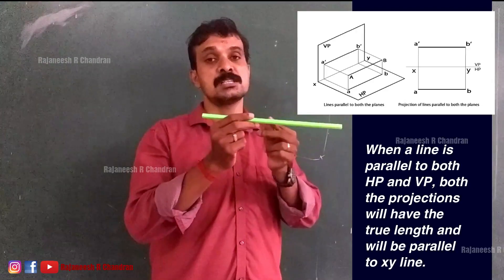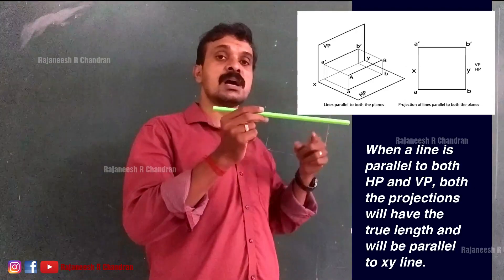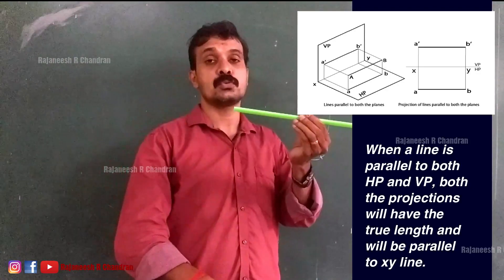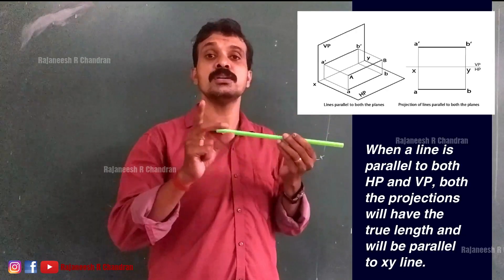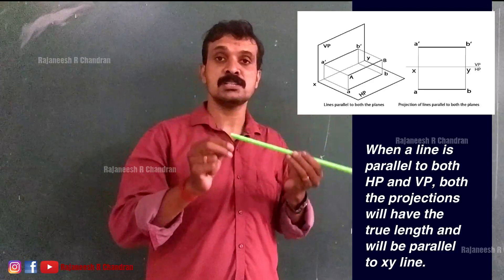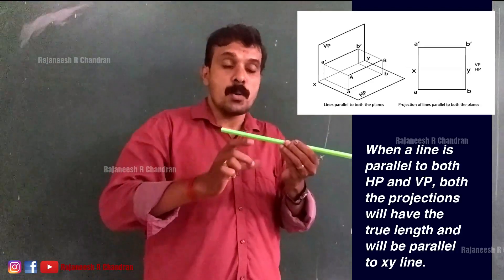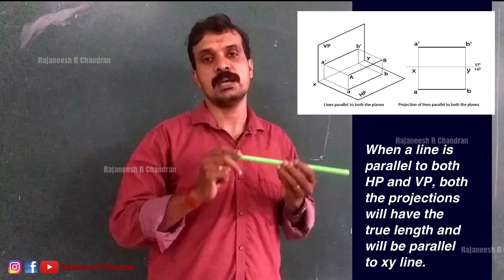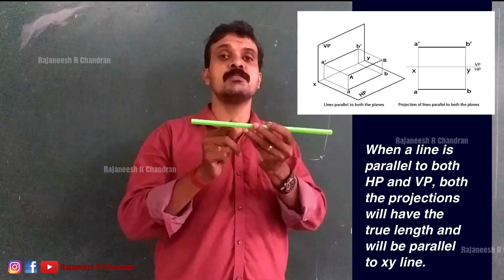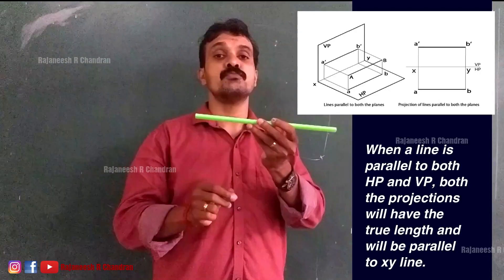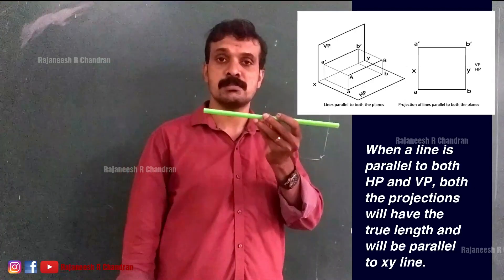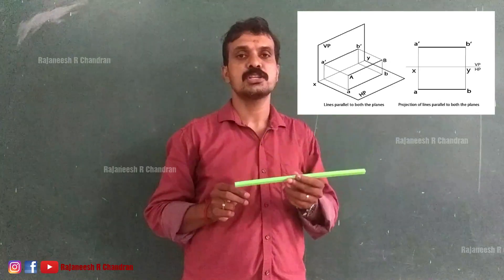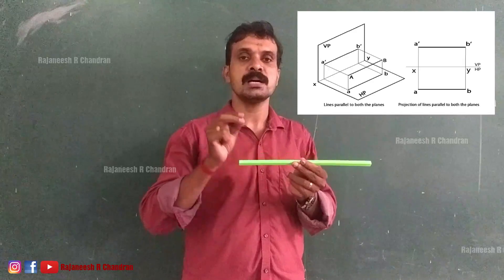When a line is parallel to both HP and VP: since it is parallel to VP, the front view should show true length and the top view should be parallel to XY; since it is parallel to HP, the top view will show true length and the front view should be parallel to XY. Both conditions can be satisfied only if both projections show true length and are parallel to XY. You can see on your screen the physical position of line AB which is parallel to both HP and VP, along with its projections.